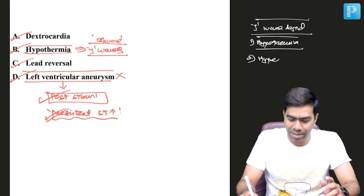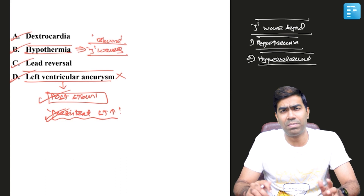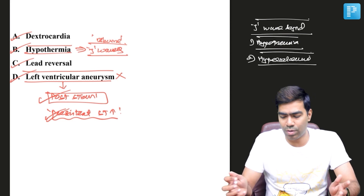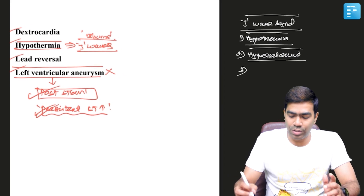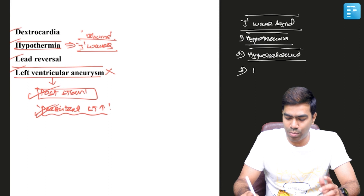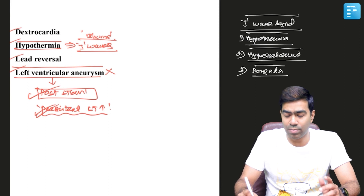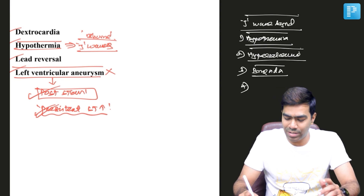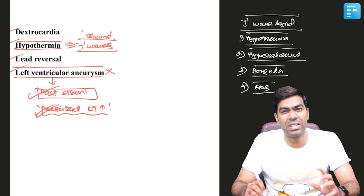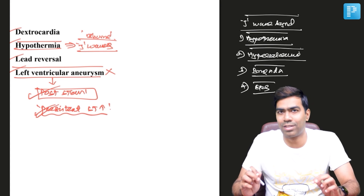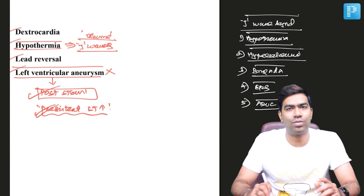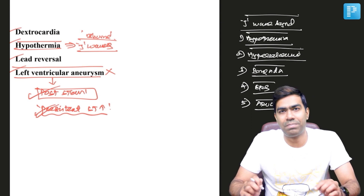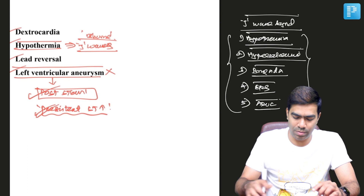J waves can also be seen in hypercalcemia — some people call those Osborne waves too, though I'm uncertain about the legitimacy of that. Number three, J waves can be seen in Brugada syndrome, where they are called Brugada waves. They can also be seen in early repolarization syndrome, especially in V4, which shows a characteristic fishhook pattern. Finally, J waves can be seen in arrhythmogenic right ventricular cardiomyopathy, where they are called epsilon waves.